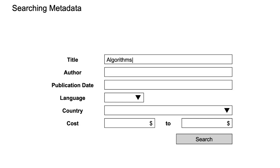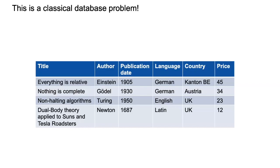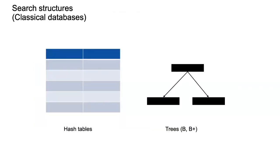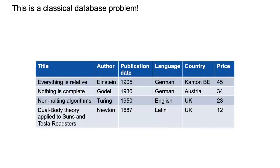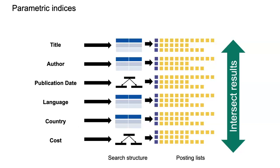We could index metadata and offer an interface to search by title, author, publication date, etc. That's just a database problem — you put everything in a relational table and it's a SQL query. From data management, you know the two main kinds of indices: the hash table and the B+ tree. Surprise — those are exactly the ones used in Boolean queries too. We use hash indices for fields like language, country, title, author, and B+ trees for publication date and cost where you need ranges.